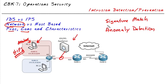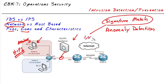With a signature match, a vendor provides a database of, say, a thousand signatures, and every packet being sent is compared against that database. If there's a pattern match, the IDS or IPS device flags it.